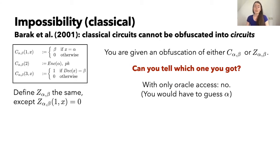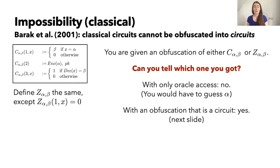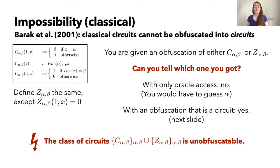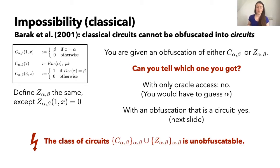However, if we're thinking of the obfuscation as another circuit which you can manipulate and compute on, then you can tell the difference. Here we arrive at a contradiction: if the class consisting of C_{α,β} and Z_{α,β} were obfuscatable, you would not be able to tell the difference — but you can. This is the argument at the heart of the Barak et al. impossibility proof, where they show this class of circuits is unobfuscatable.